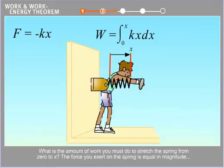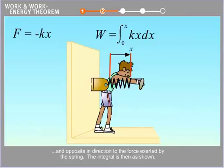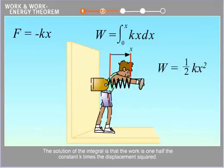What is the amount of work you must do to stretch the spring from zero to x? The force you exert on the spring is equal in magnitude and opposite in direction to the force exerted by the spring. The integral is then as shown. The solution of the integral is that the work is one half the constant k times the displacement squared.